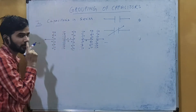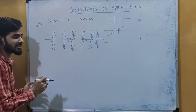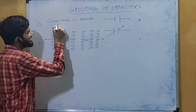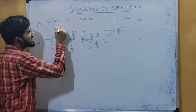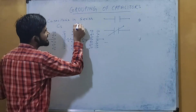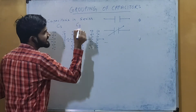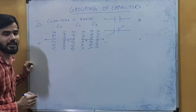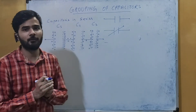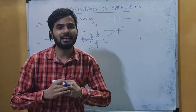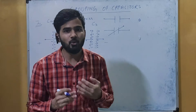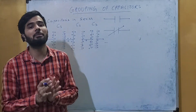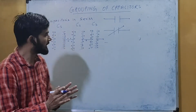Now we assume that the capacitance of the first capacitor is C1, similarly for the second capacitor it is C2, and for the third capacitor it is C3. In the case of series capacitors — end-to-end connection — the charge remains the same on all capacitors.